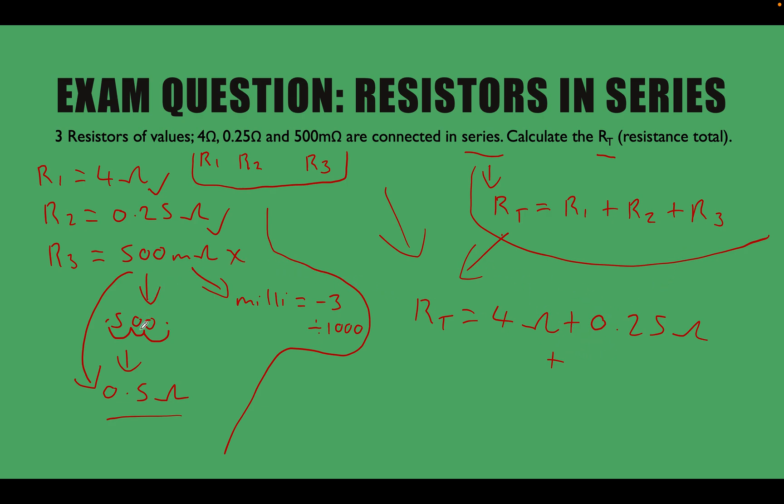plus R3, which we just converted down to 0.5 ohms. We add these together, these values, and that's going to give us the resistance total in this circuit, which is 4.75 ohms. So let's quickly recap.